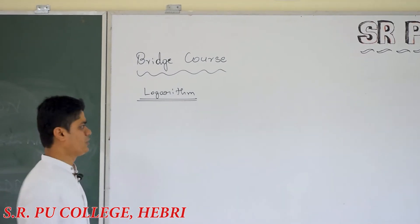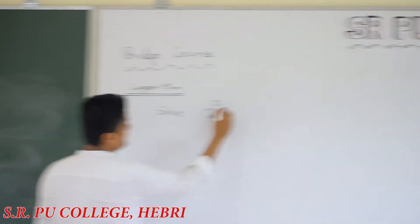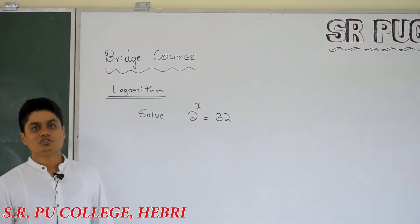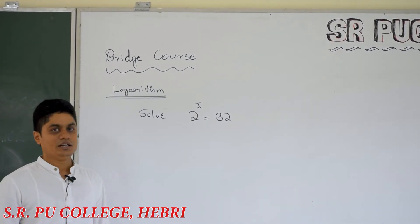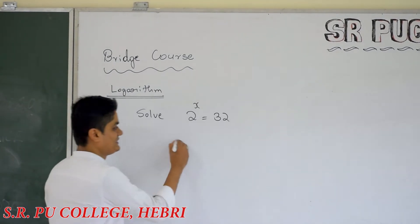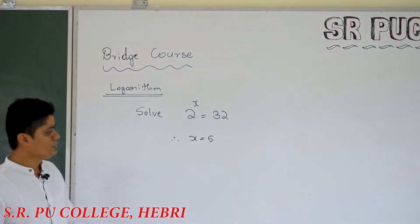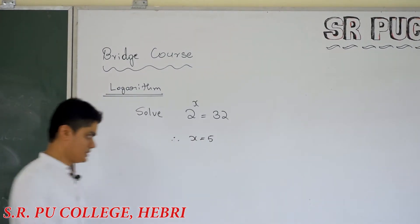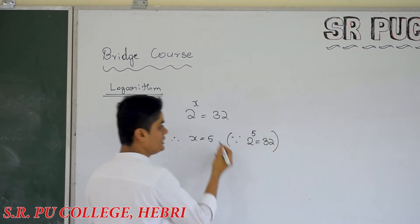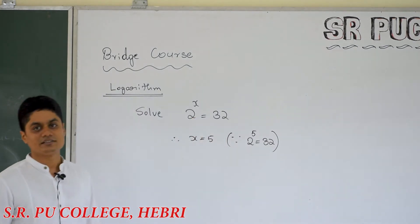Let me start with one simple equation. Suppose the question is: solve 2 power x is equal to 32. If I ask you to solve 2 power x is equal to 32, I hope most of you will answer this question. What is the answer? The answer is x is equal to 5. How? Because you know that 2 power 5 is equal to 32, so directly you compare and give the answer x is equal to 5.